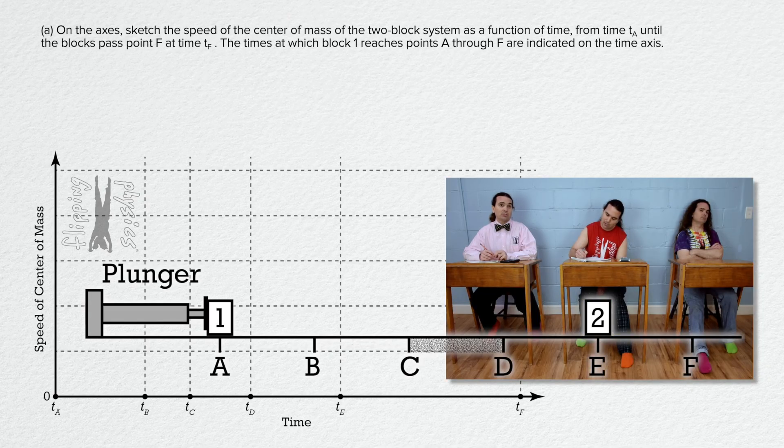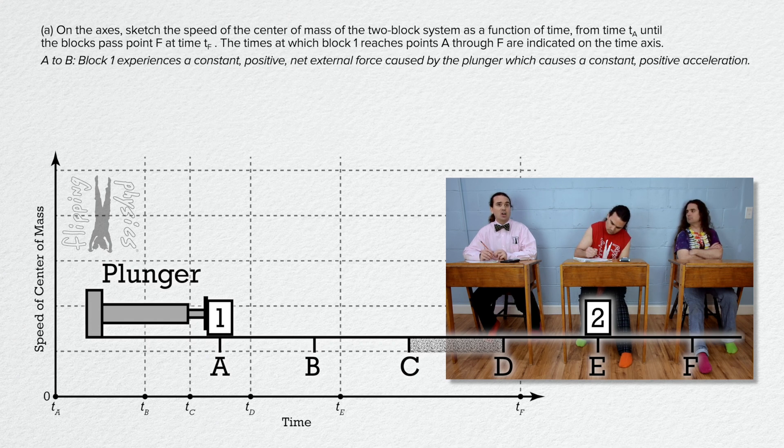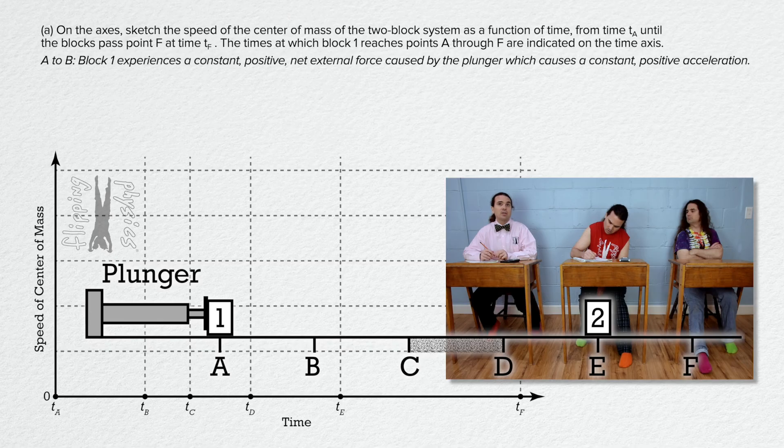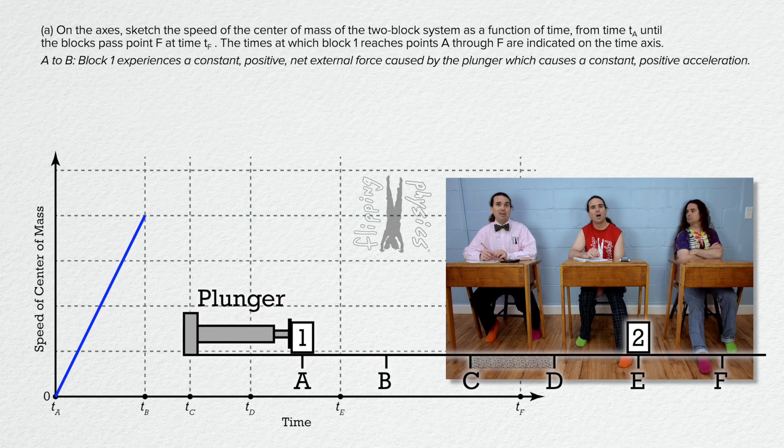Okay, as block 1 goes from point A to B, it experiences a constant positive net external force caused by the plunger which, according to Newton's second law, causes a constant positive acceleration. So, draw a line with a constant positive slope from time A to time B.